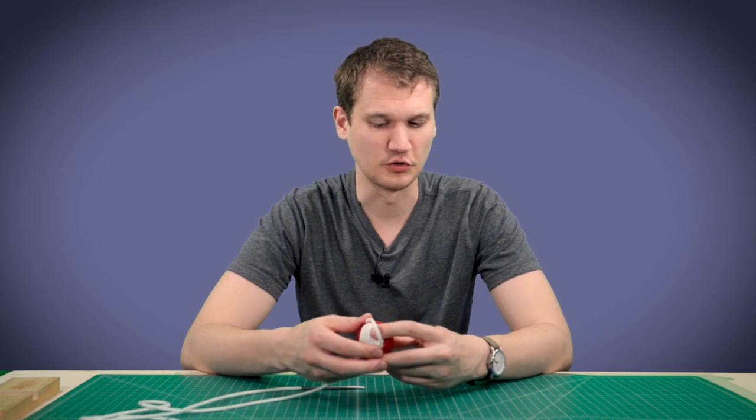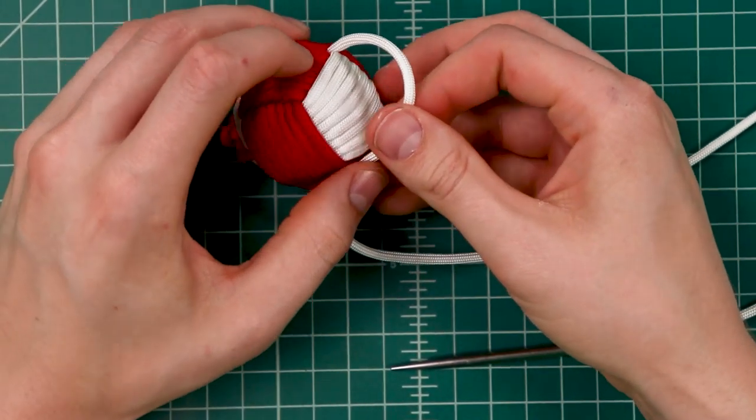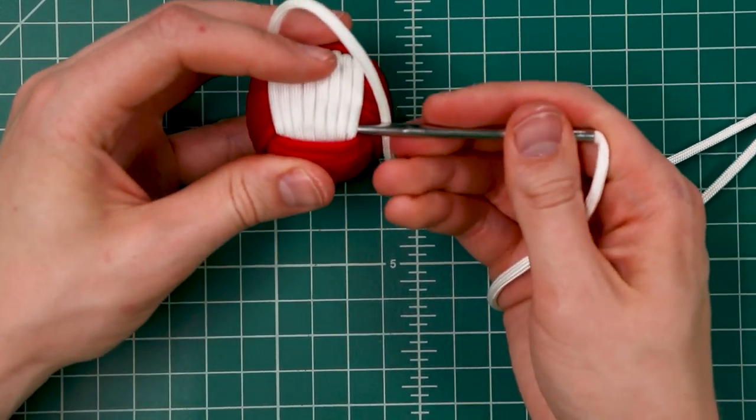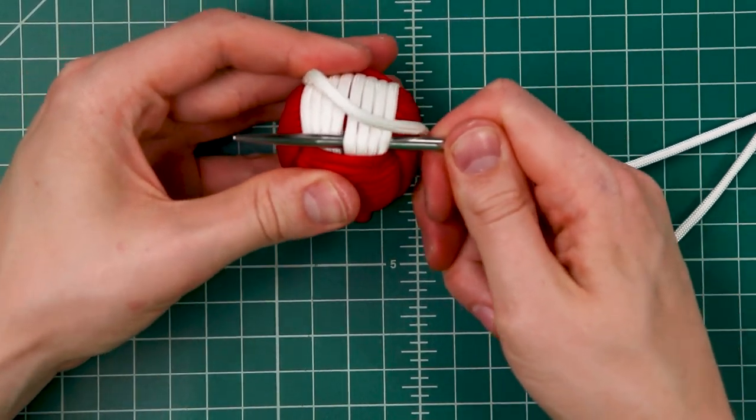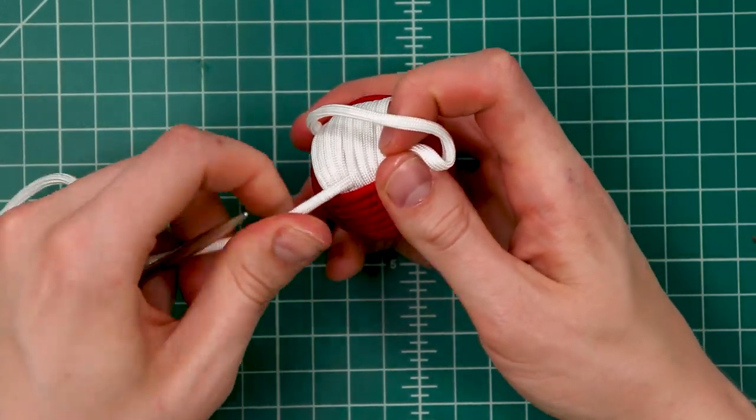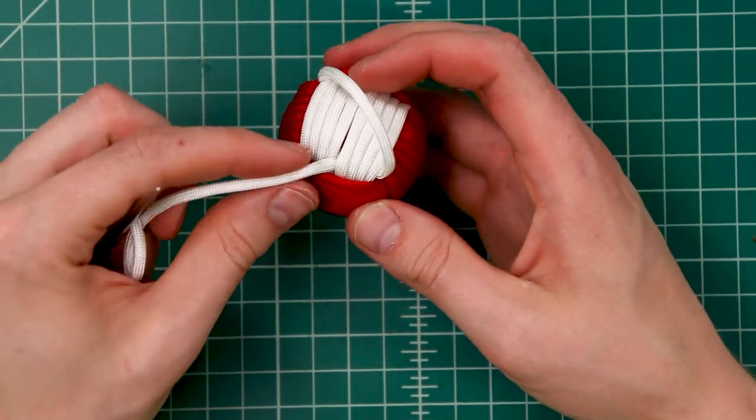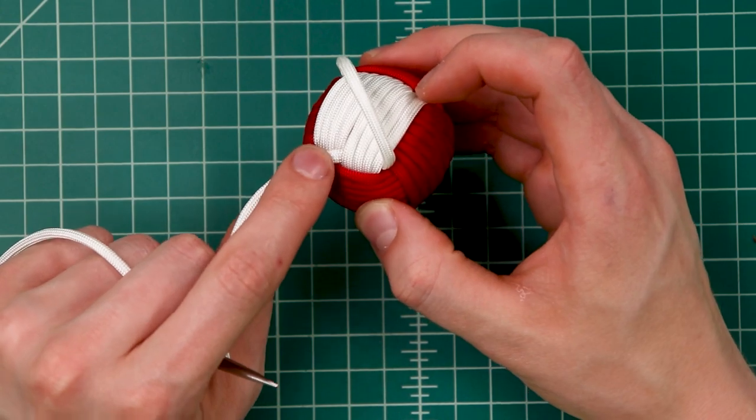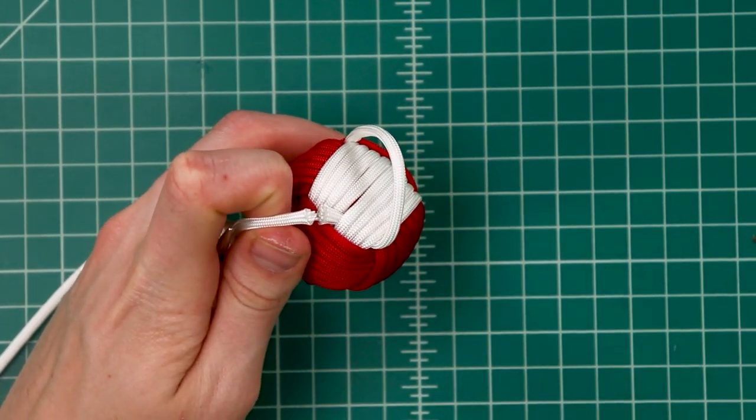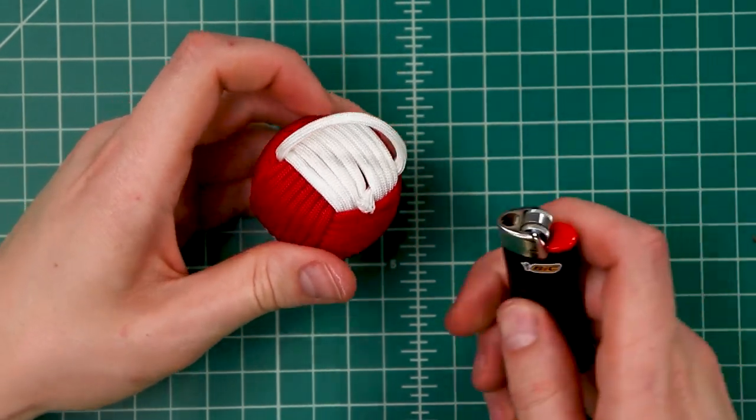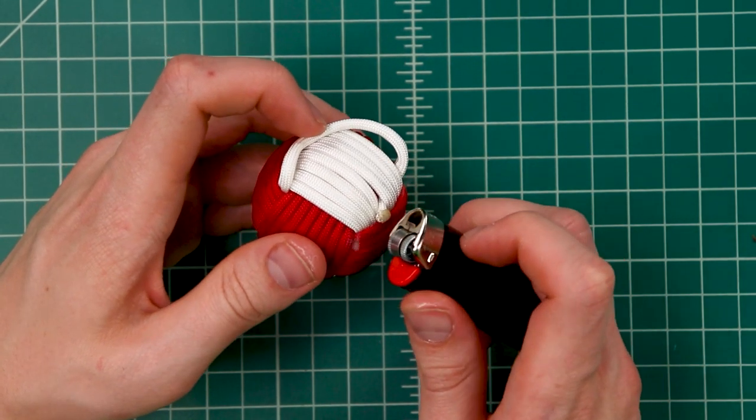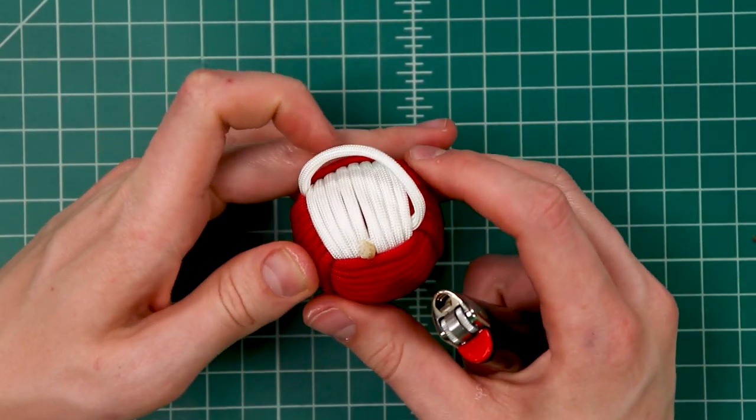To finish off our other end, we want a little bit more secure of a closure than we did on the top. I'm just going to leave a loop like this that we can attach a keychain to. I'm going to run our working end with the fid through at least four of those loops and then pull it through. It'll be pretty tight at this point if you've tightened your knot down well. That's about the size we want it. Because we're pulling this direction, we should just be able to clip the end there and melt it to keep it from sliding through. I'm just going to melt it on the outside, but if you want to poke it through so that you don't see that melt mark, you can definitely do that.